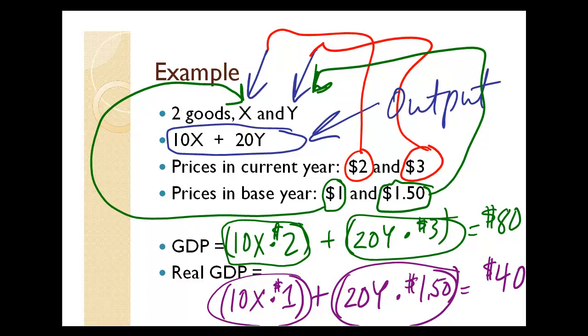What's the difference? GDP is current year output times current year prices, whereas real GDP is current year output times base year prices. Another name for real GDP is sometimes 'GDP in base year dollars.'